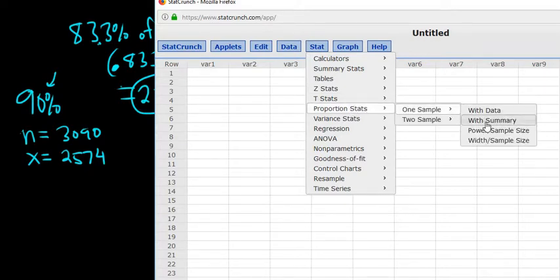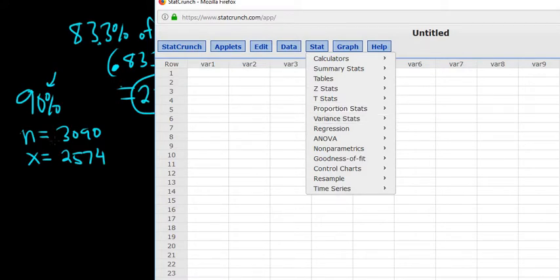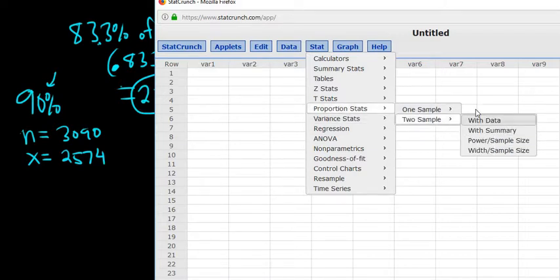So whenever you have to do a confidence interval for a proportion or a percentage, just go to Proportions. And then to decide which one this is, like one sample or two sample, if you have one n, it's one sample. Later on, we'll have two n's, that's two samples. And for confidence intervals, we will always be picking with summary.